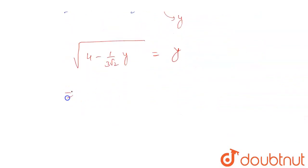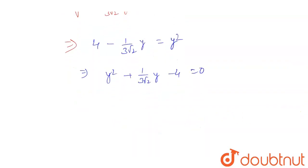Now square on both sides. This will become 4 minus 1 by 3 root 2 times y is equal to y squared. Or you can say y squared plus 1 by 3 root 2 times y minus 4 is equal to 0.